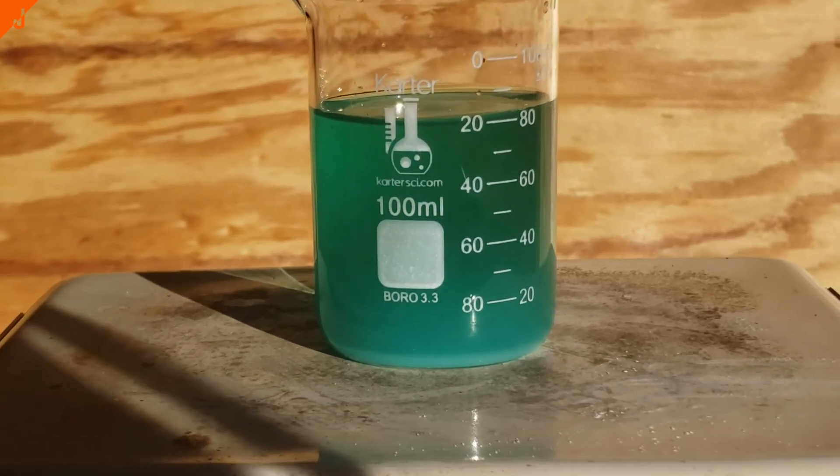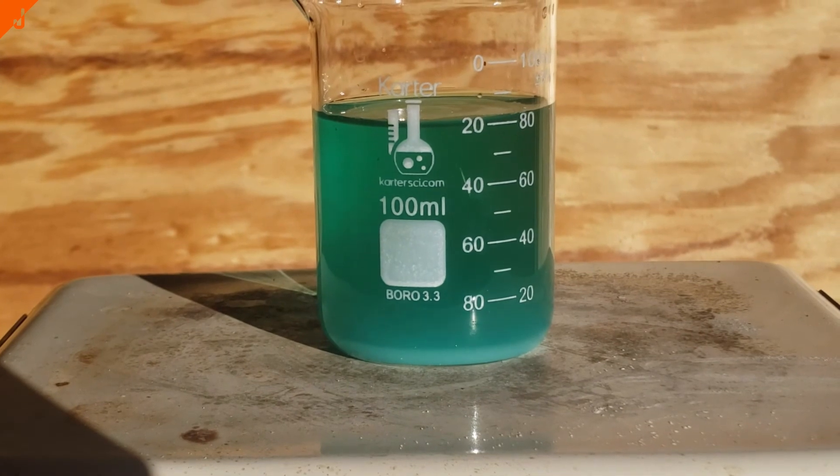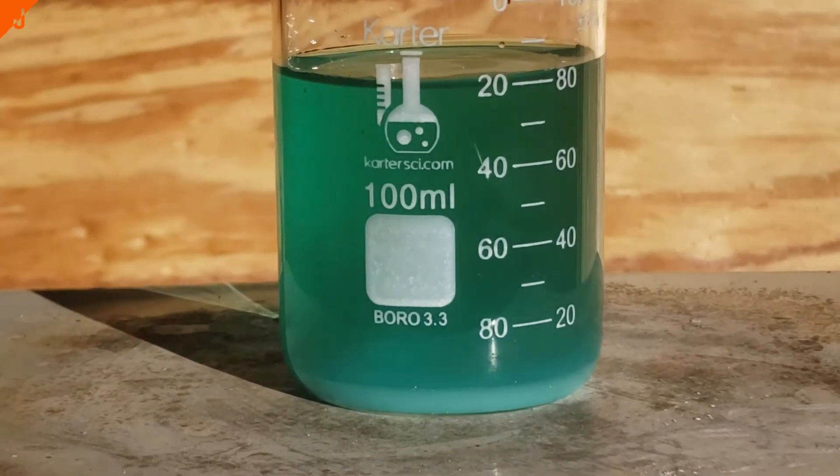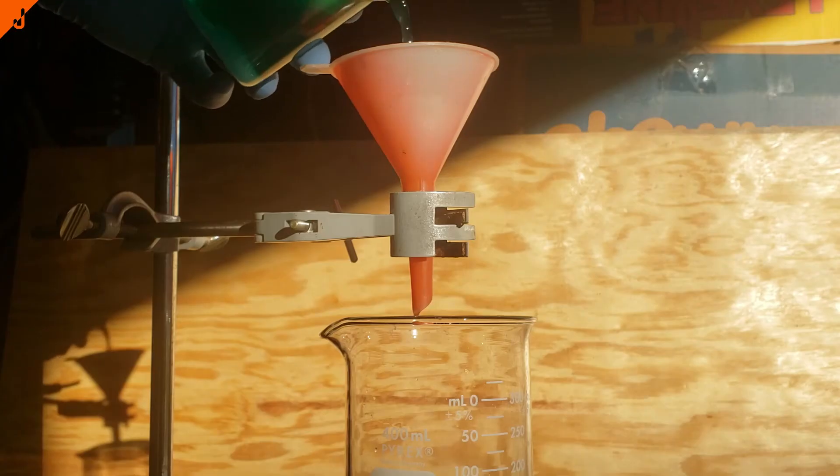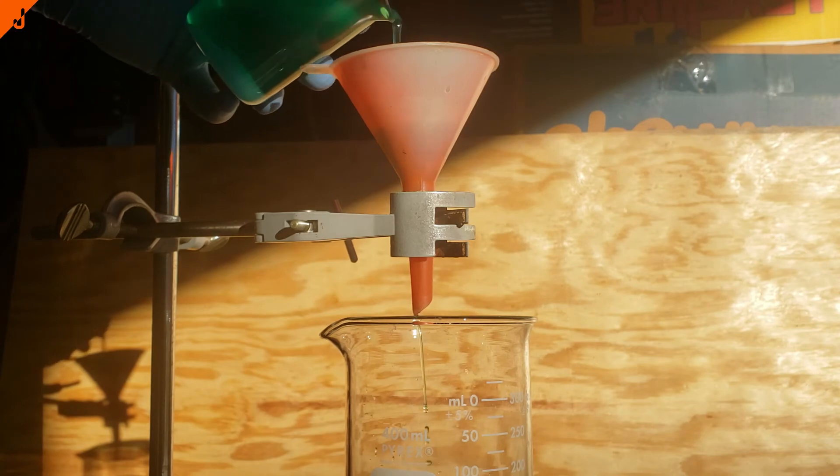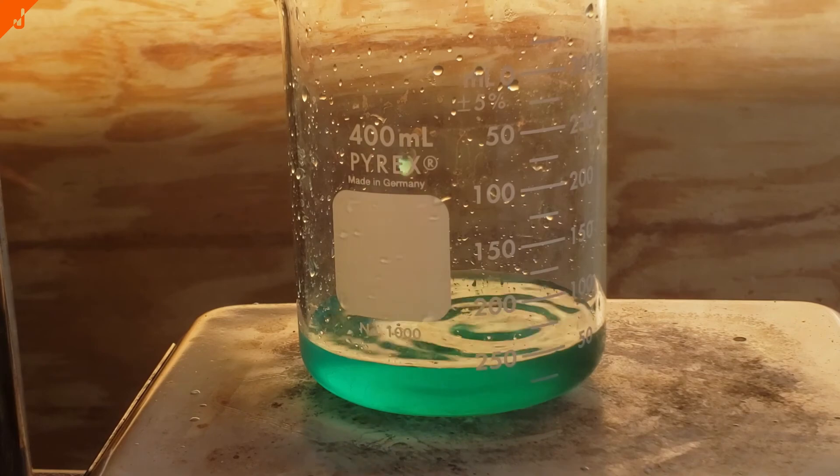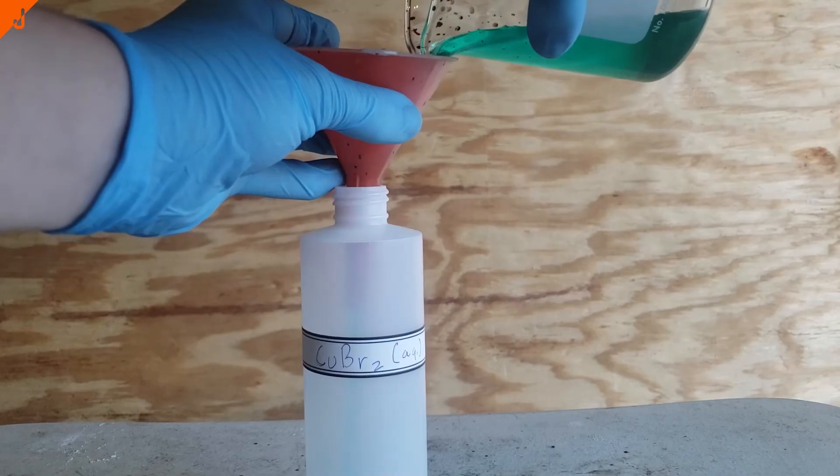Anyway, I let this stir for a bit longer, and then I set up for gravity filtration. As I filtered, the dark purple to orange spots all over my table and glassware really started to become evident.